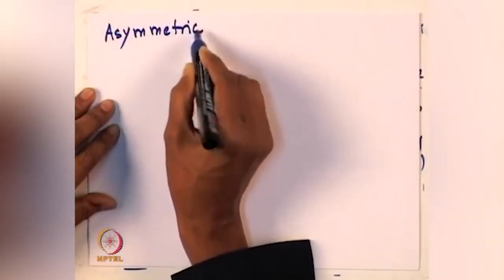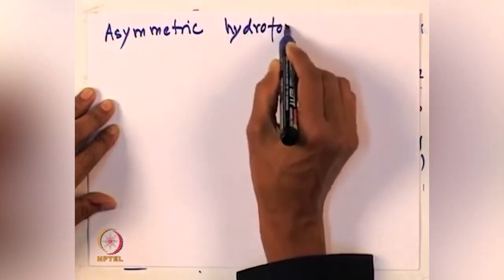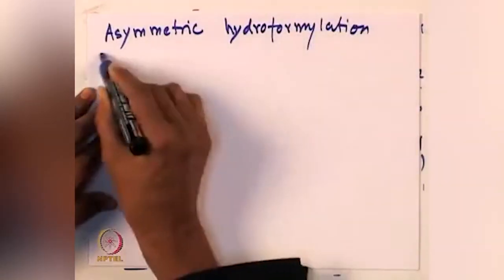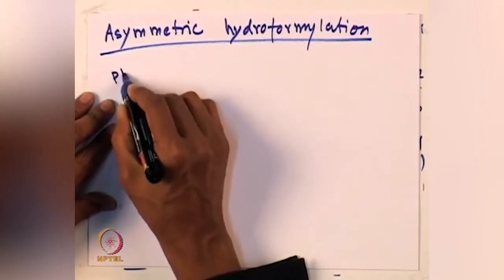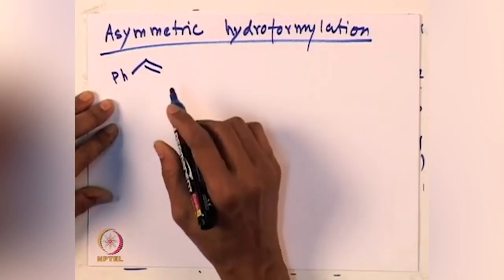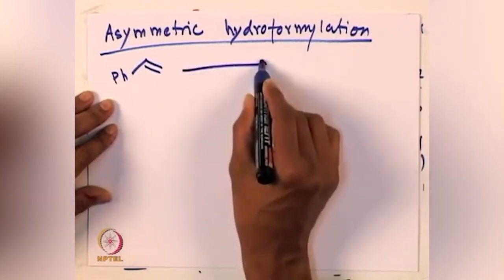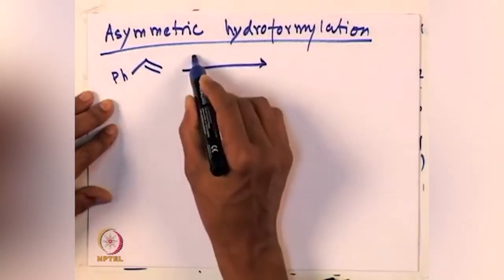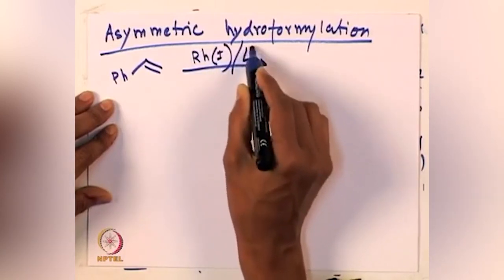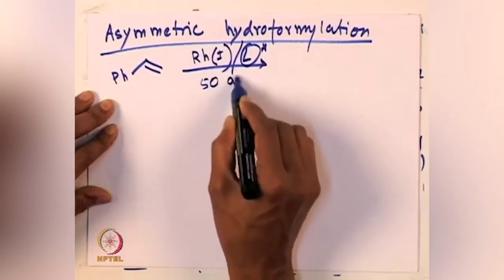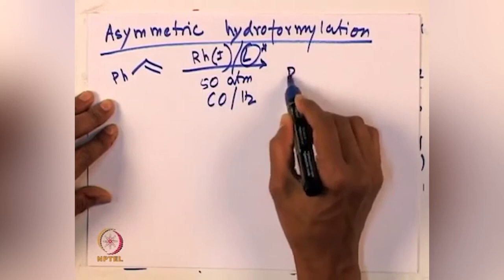Today we will mainly focus on one of the asymmetric cases and then hydrocarboxylation. Asymmetric hydroformylation is the one we will discuss in the beginning. Asymmetric hydroformylation reactions are very important and are done industrially on a huge scale. If it is a linear product, as we have seen in the last class, there is no chance of getting an asymmetric one, especially if it is a terminal olefin. But if it is a styrene-type or branch product formation is happening, then we can have a chiral ligand and get the product in asymmetric fashion.